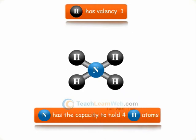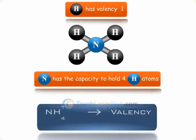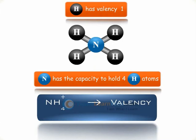Valency is represented as a subscript. For example, 4 is the valency in NH4, i.e., the ammonium ion.